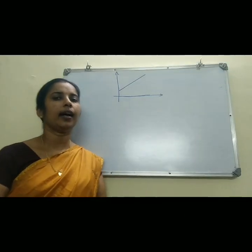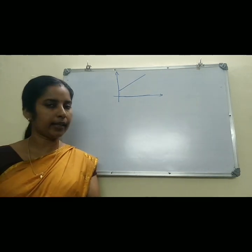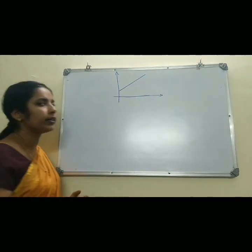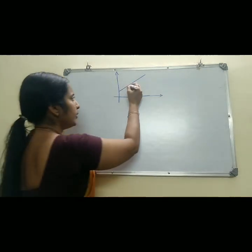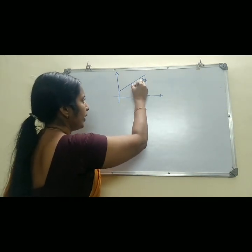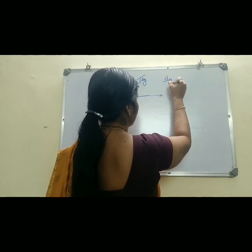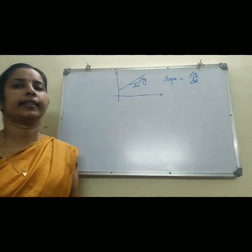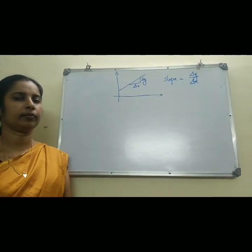To answer this question, I have drawn a straight line. We know the slope at every point on a straight line is the same — here, or here, everywhere the slope is the same. To calculate the slope on a straight line, you consider a right-angle triangle with sides delta y and delta x. Then slope is delta y divided by delta x, that is, change in y divided by change in x.